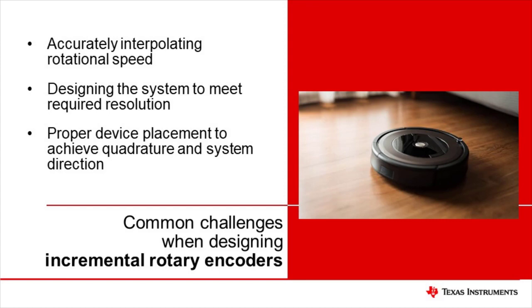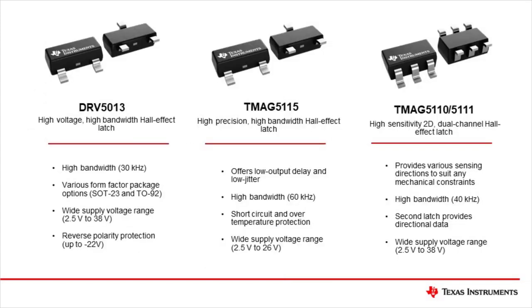Lastly, system direction can be acquired by using quadrature, which can also provide positional data during the system's operation. Quadrature requires precise position of two Hall sensors to create specific offset between the two signals. By observing the order of the state in which these signals occur, we can determine the system's direction or position. Our magnetic sensing portfolio provides many options when designing incremental rotary encoders.